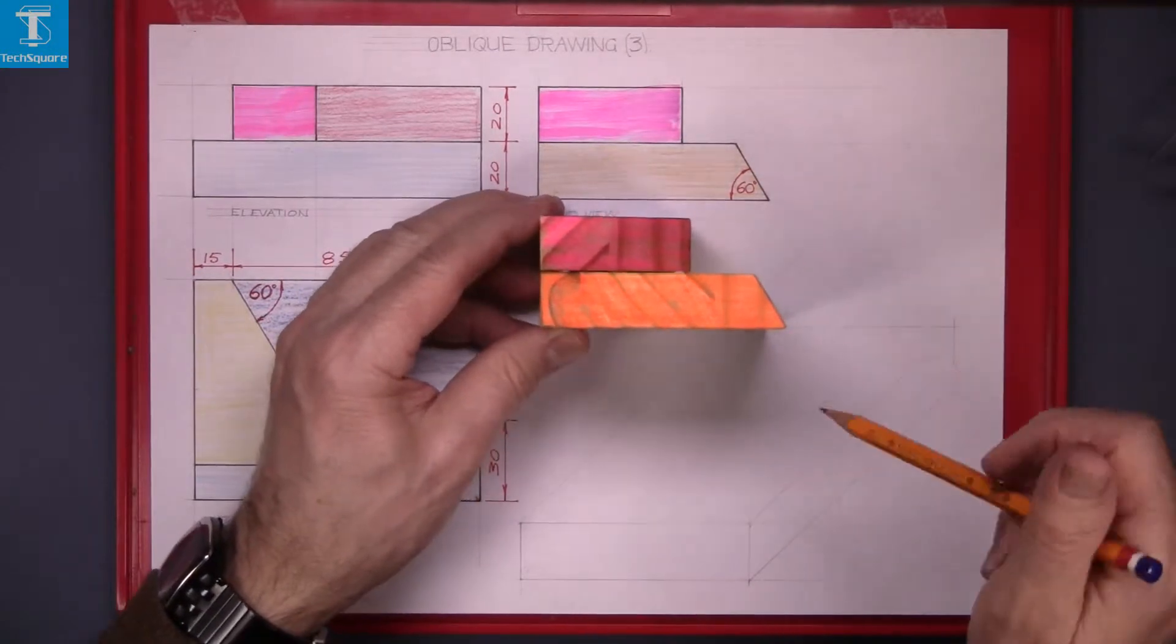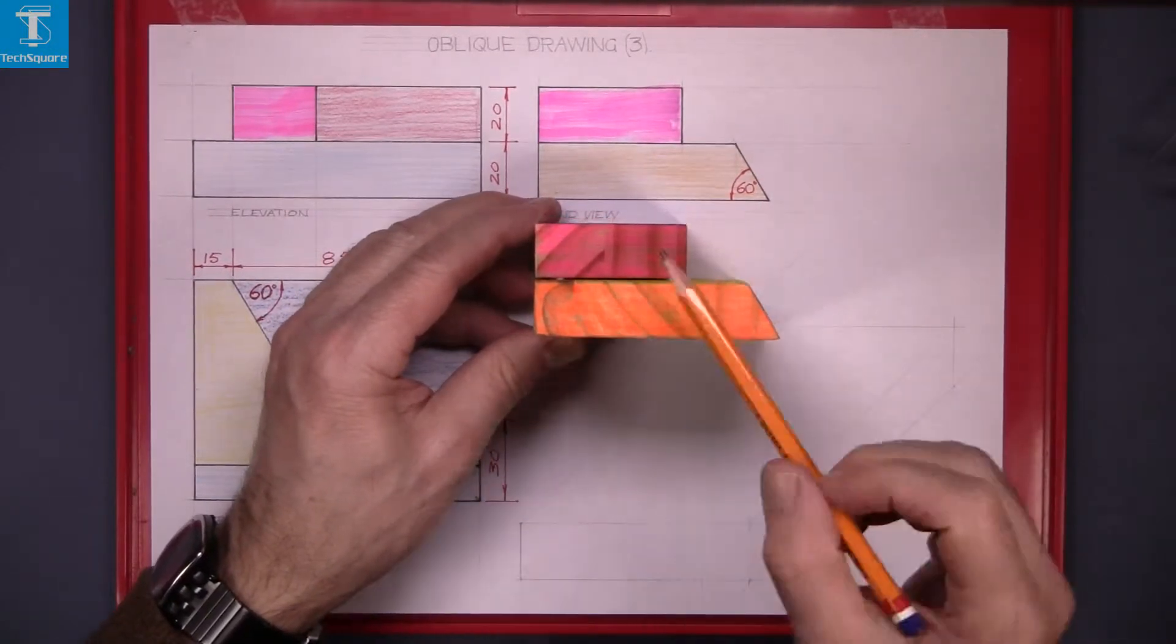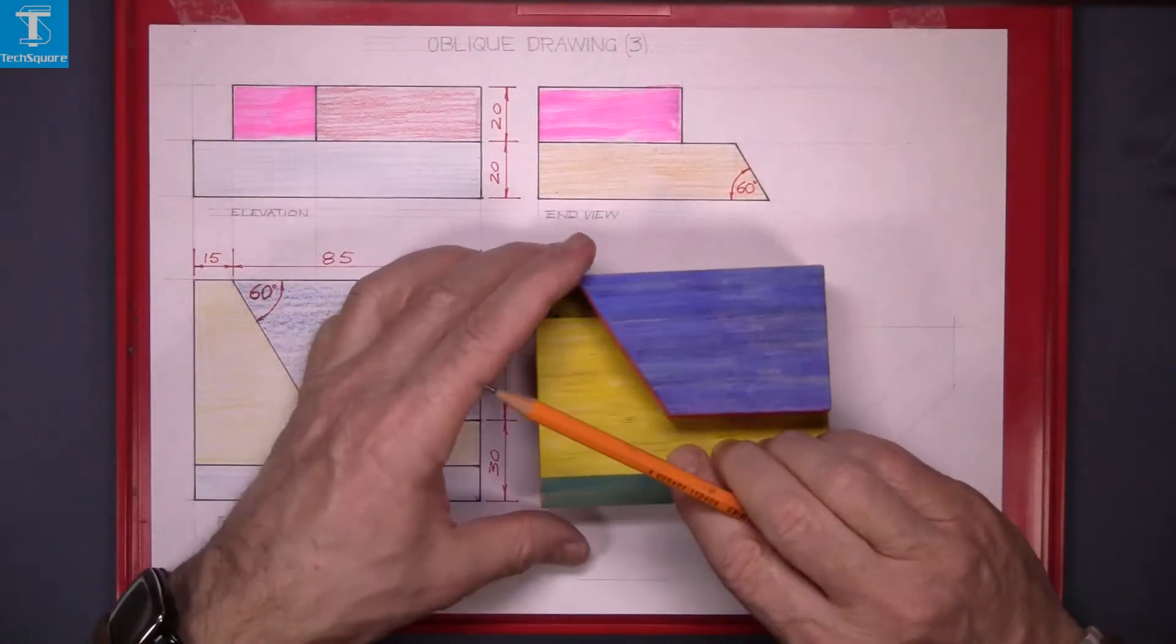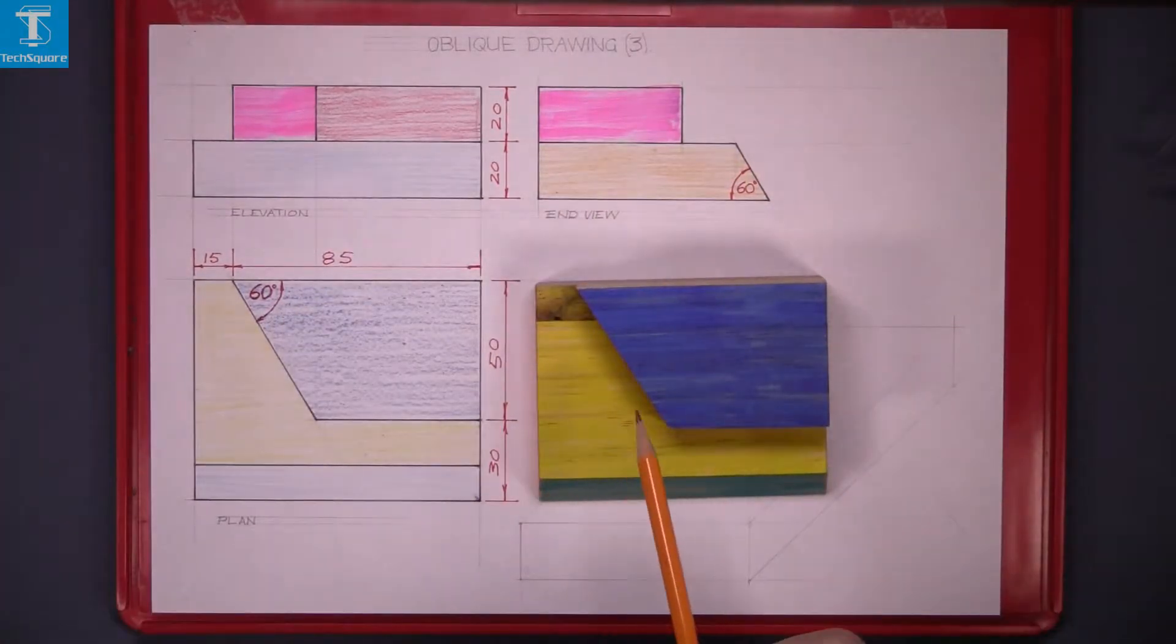The end view, that's looking at there, the orange surface and the pink surface and the plan looking straight down top of it.